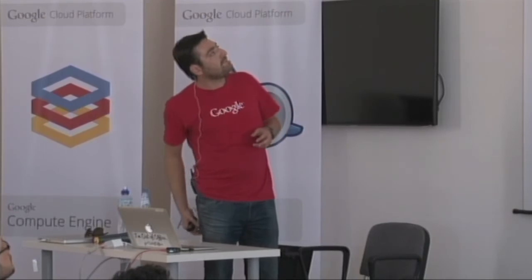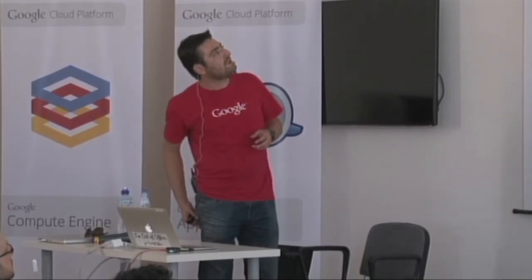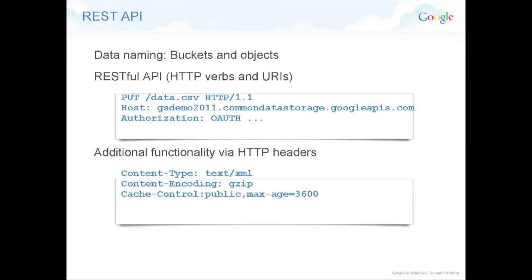The API is RESTful — buckets and objects. You just use HTTP PUT. As always, we provide client APIs to help you save time if you want to use the Java client, .NET client, or whatever language, so you don't have to work at the raw HTTP level.